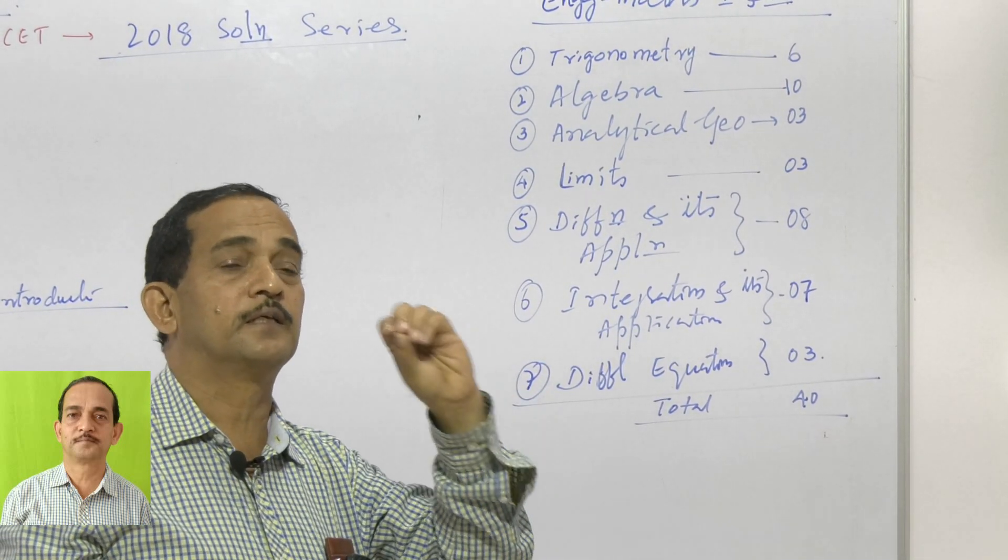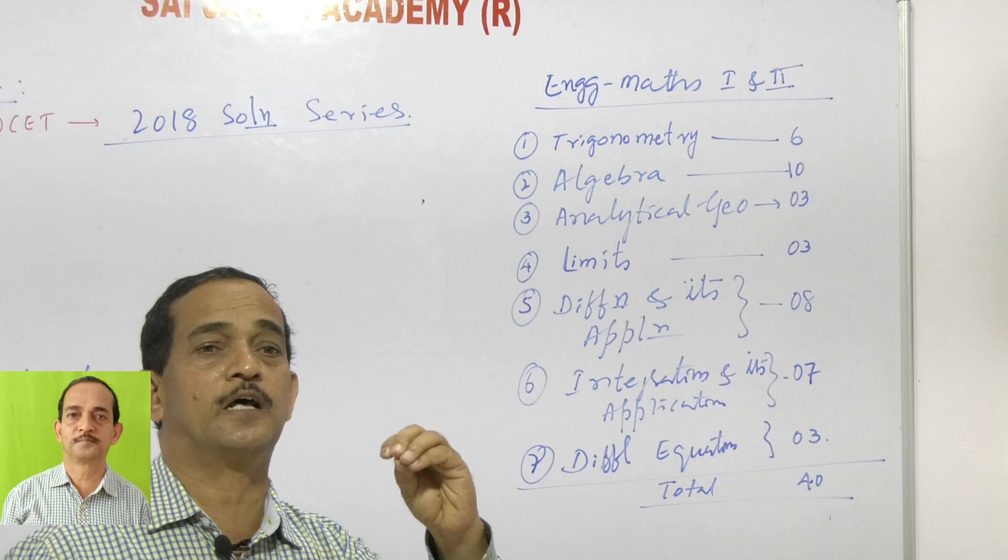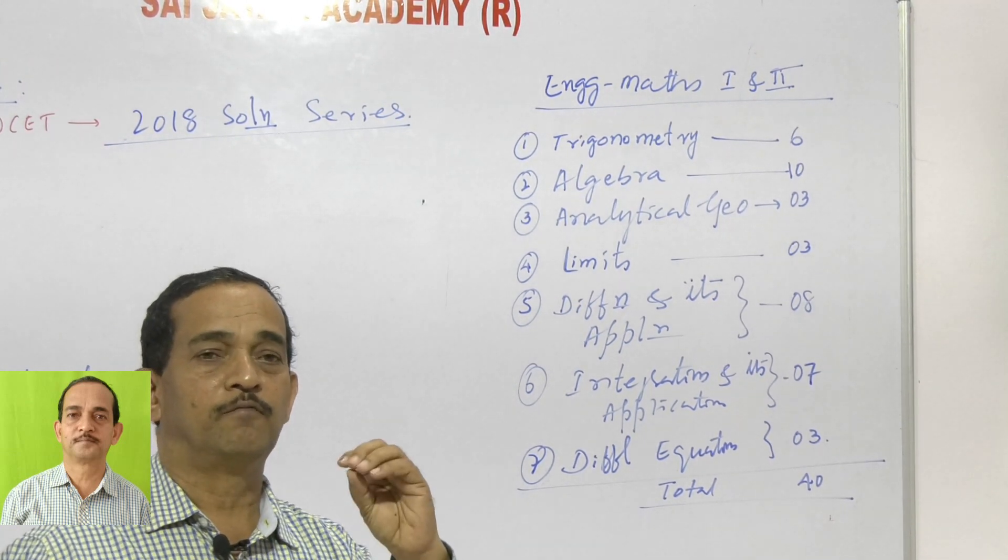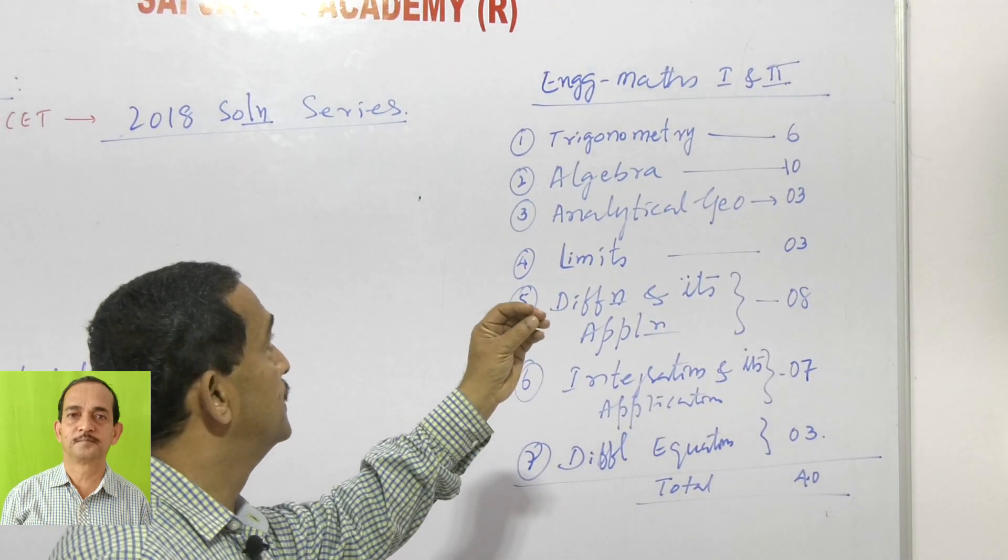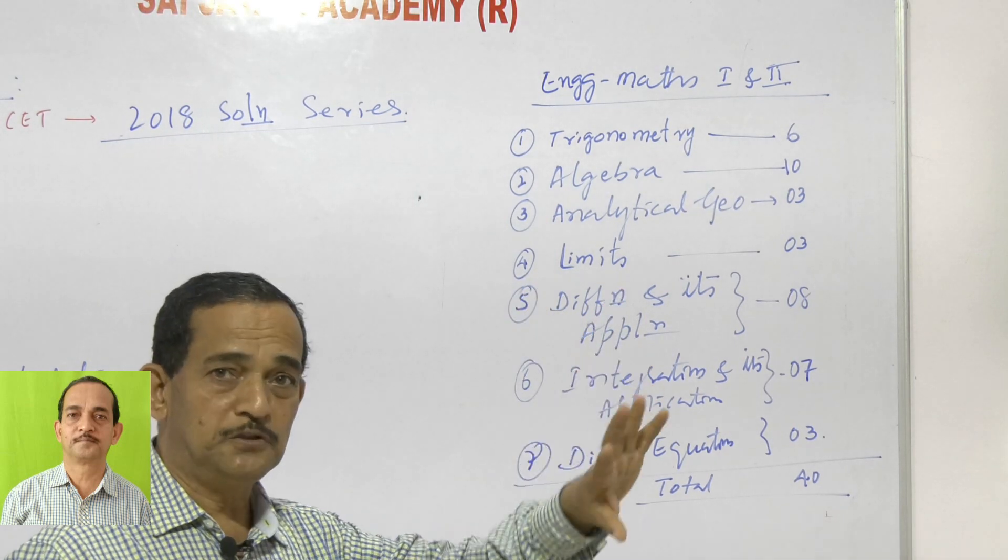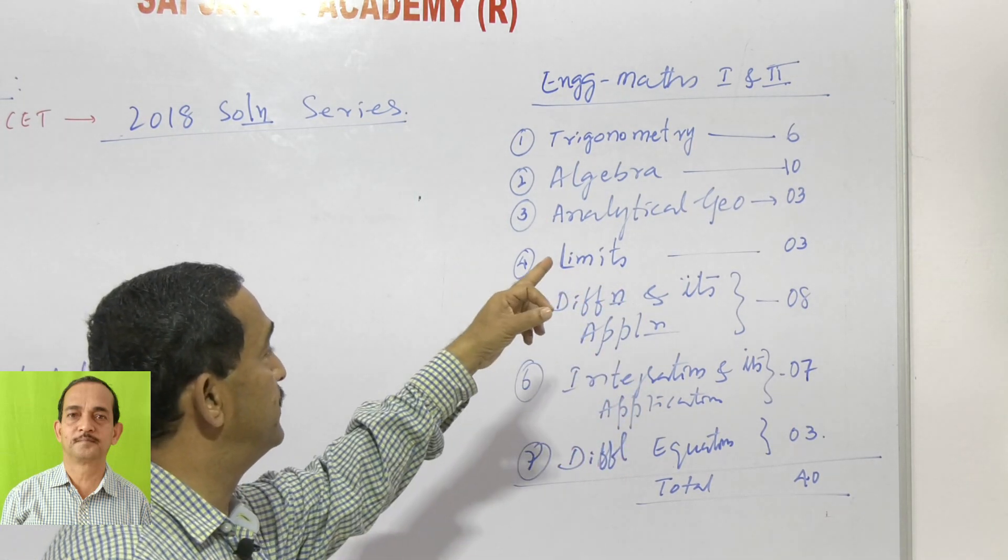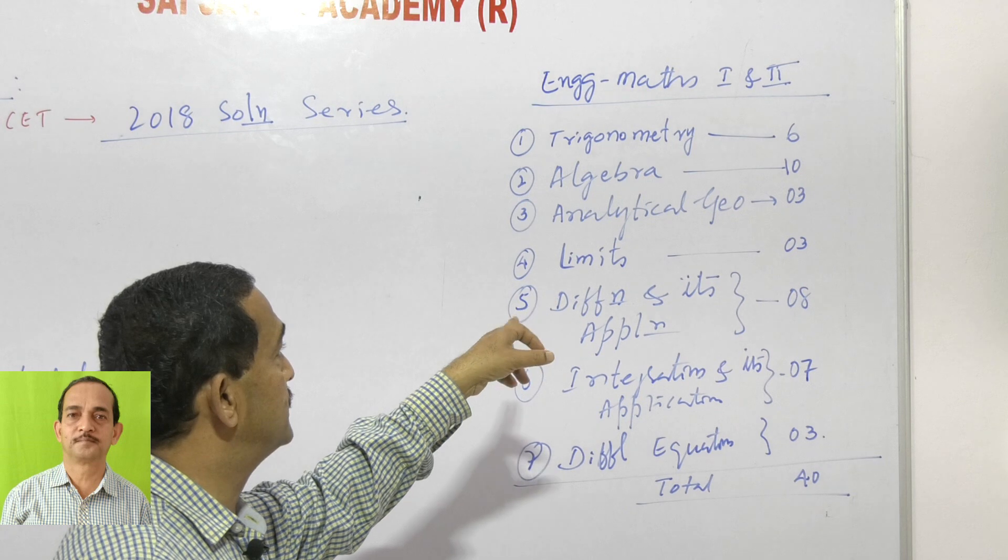In that topic, they are supposed to set questions around 40 marks in Engineering Mathematics subjects. The portions of this subject are trigonometry, algebra, analytical geometry, limits,